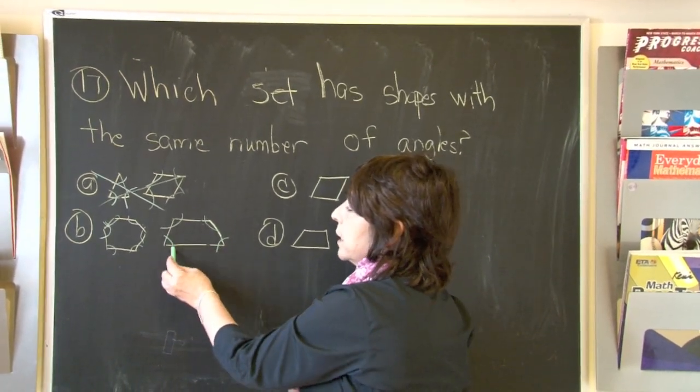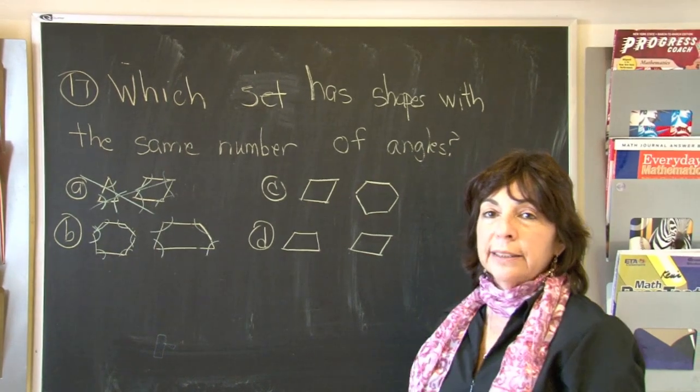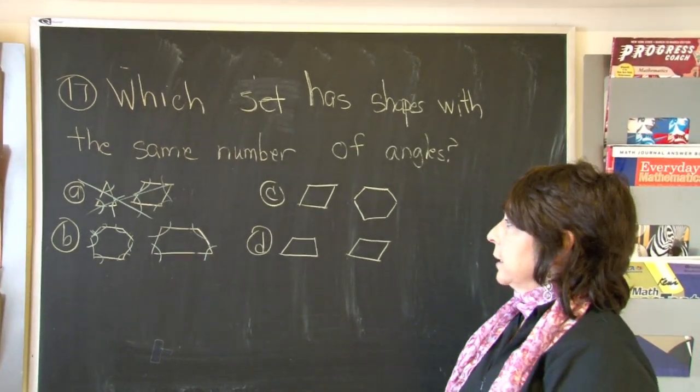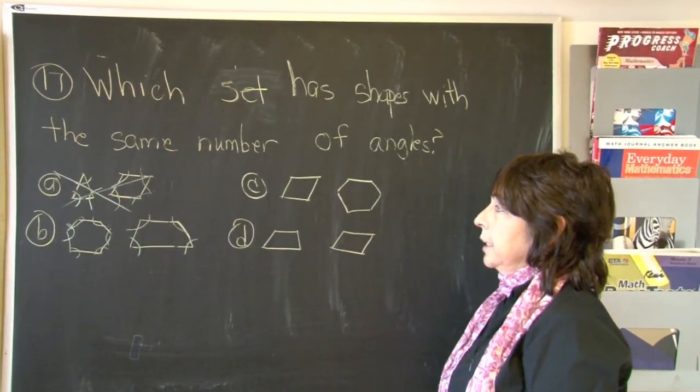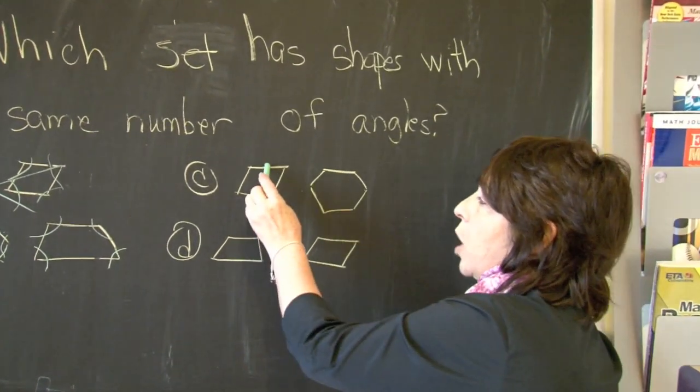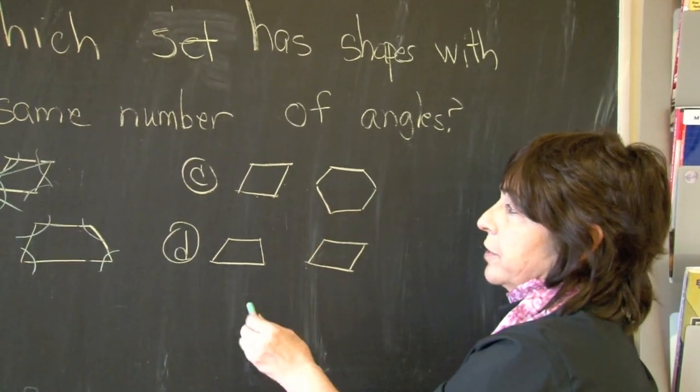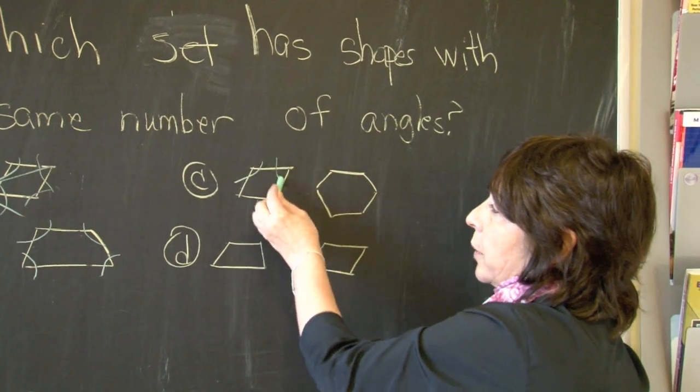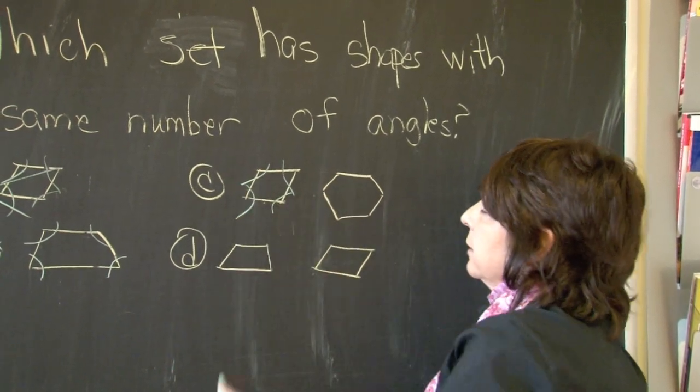Now let's look at choice C. Again, we have a parallelogram. One, two, three, four. If there are four sides, there's going to be four angles.